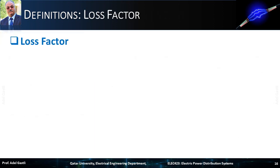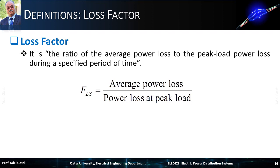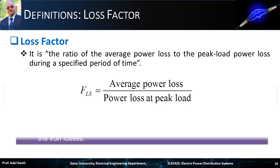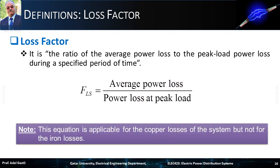The next factor to study is the loss factor. It is the ratio of the average power loss to the peak load power loss during a specified period of time. Note that this equation is applicable only for the copper losses of the system, but not for the iron losses.